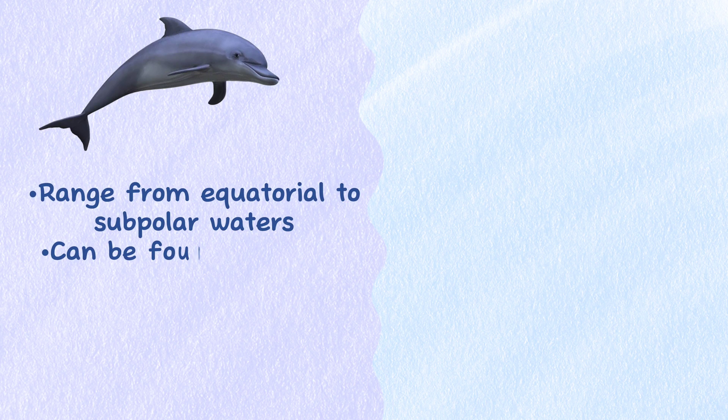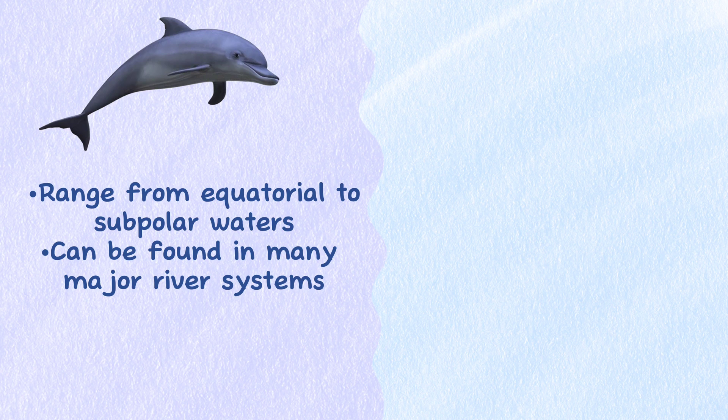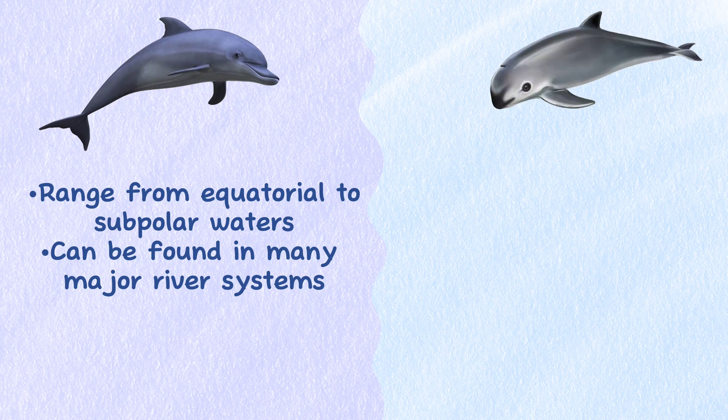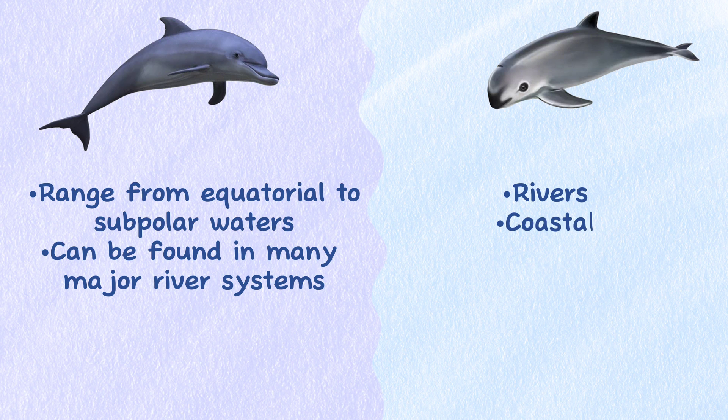Range. Distributed in marine environments worldwide, dolphins range from equatorial to subpolar waters and can also be found in many major river systems. Porpoises are abundant and found in a multitude of environments, including rivers, coastal and shelf waters and open ocean, covering all water temperatures from tropical to polar.